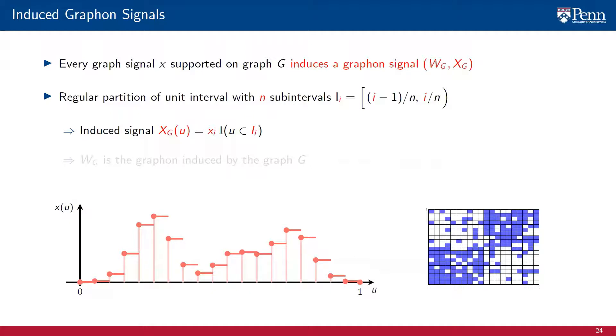As we illustrate on the figure on the right, we extend the graph signal value to cover the whole of the ith partition. Recall that the subintervals of the partition are closed on the left and open on the right.